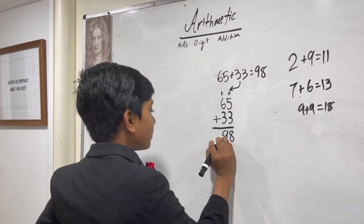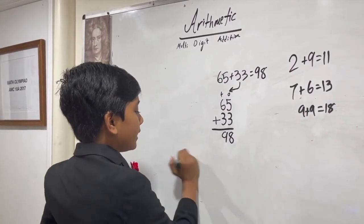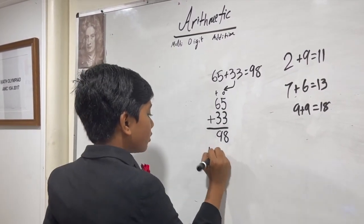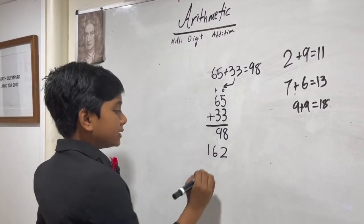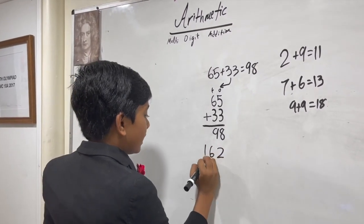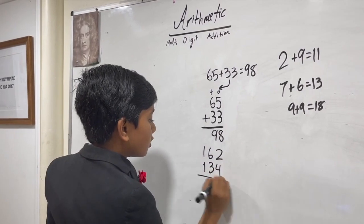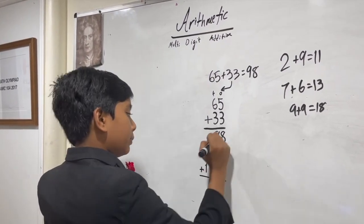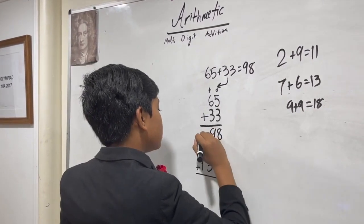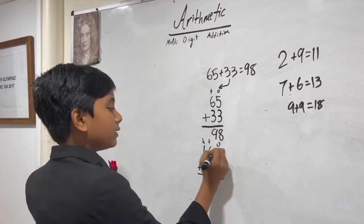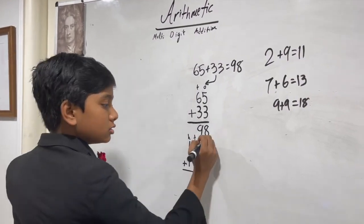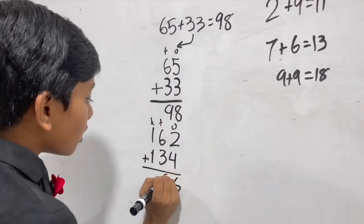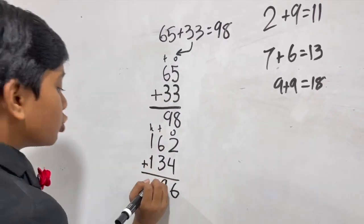Okay. Now, what if we get some higher numbers? Let's do one with three digits: 162 and 134. Adding it is also pretty simple. You just go column by column, right to left. So, 2 plus 4 is 6, 6 plus 3 is 9, 1 plus 1 is 2.